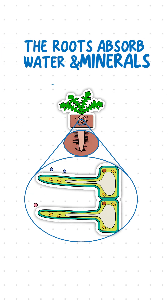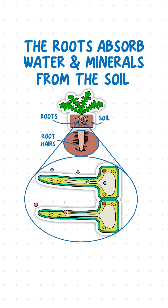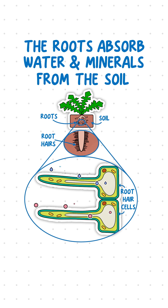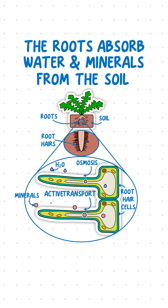The roots absorb water and minerals from the soil through root hair cells. These cells are adapted for water uptake by osmosis and mineral ion uptake by active transport.